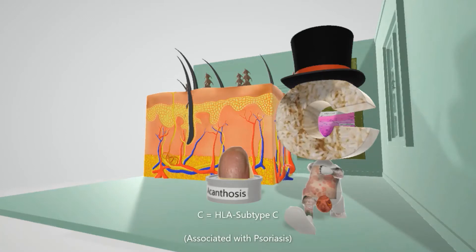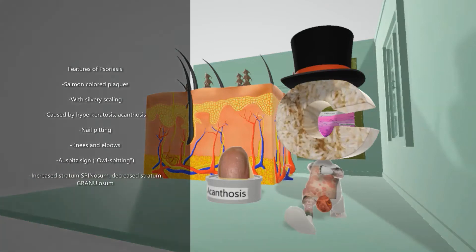People with HLA subtype C have a genetic predisposition for psoriasis, which is thought to be an autoimmune disease. Psoriasis is a chronic skin disorder characterized by papules and plaques with silvery scaling.